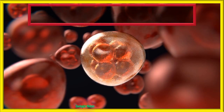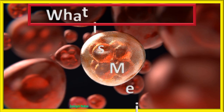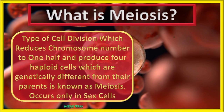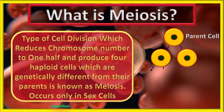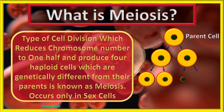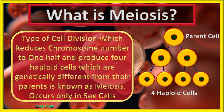What is meiosis? Meiosis is a type of cell division which reduces chromosome number to one half and produces four haploid cells which are genetically different from their parents. It occurs only in sex cells and not in somatic cells.